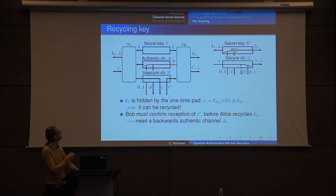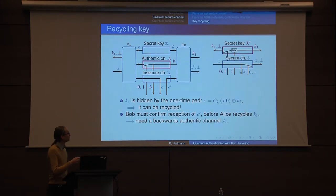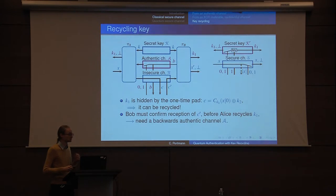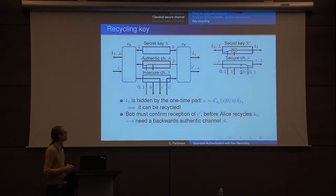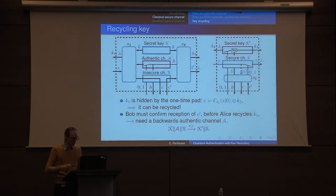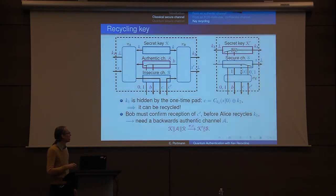So what do we get? If we look at the real protocol, we have a message coming in and out, and a key being produced. We construct two resources: a secure channel and a secret key. It's a secret key slightly weaker than the original because we give a bit more power to Eve — Eve gets to choose when they get the secret key, because they can only get it once Bob has received C′, and Eve chooses when Bob gets C′. Eve can also prevent Alice from getting a copy of the key. We can prove the two systems are indistinguishable with error ε, and the protocol constructs a new key resource and a secure channel.